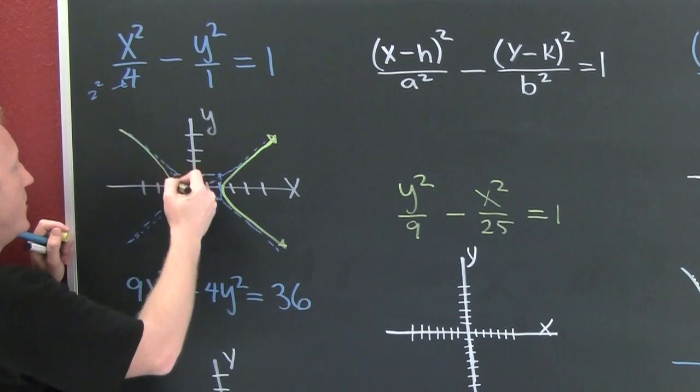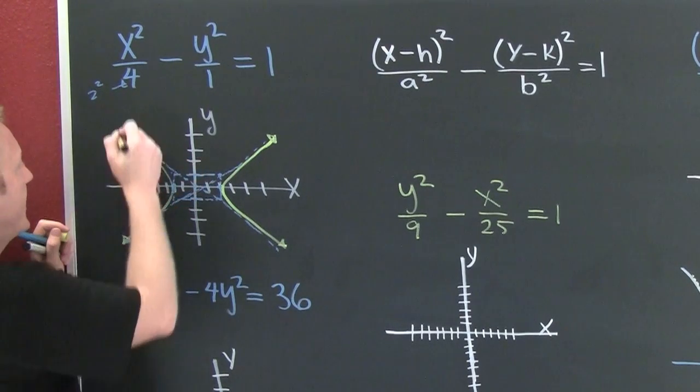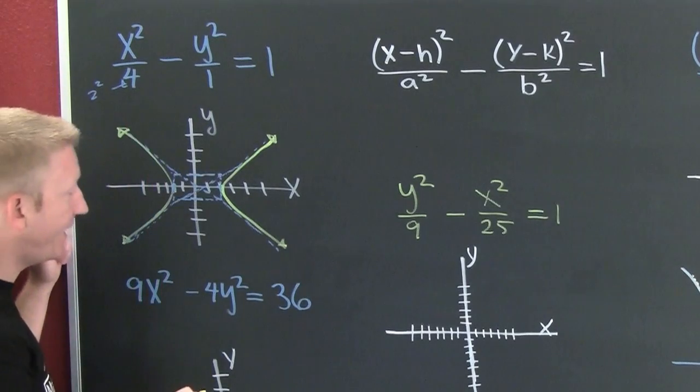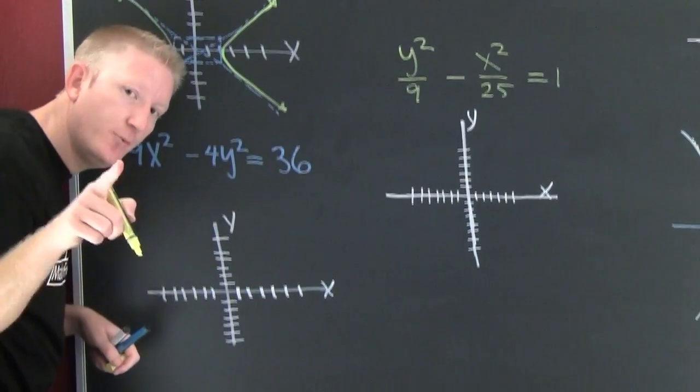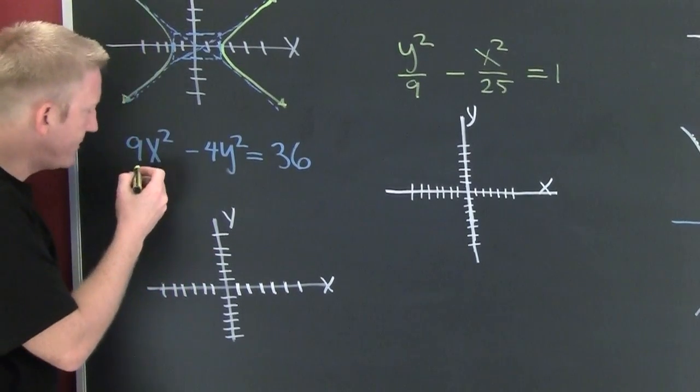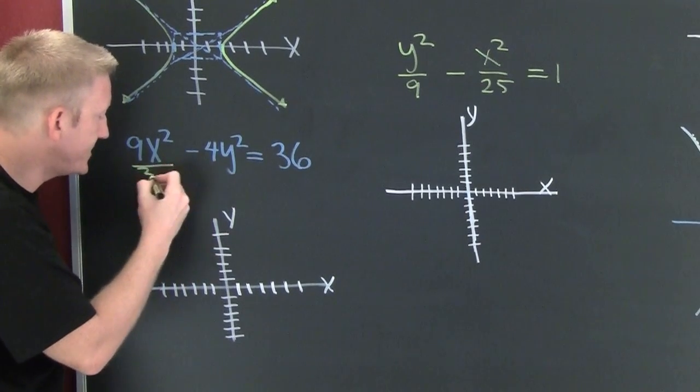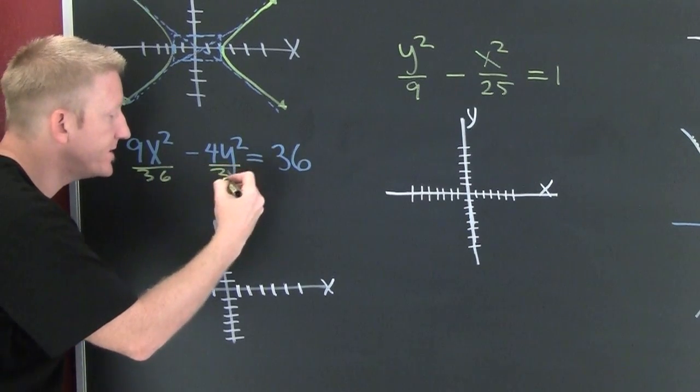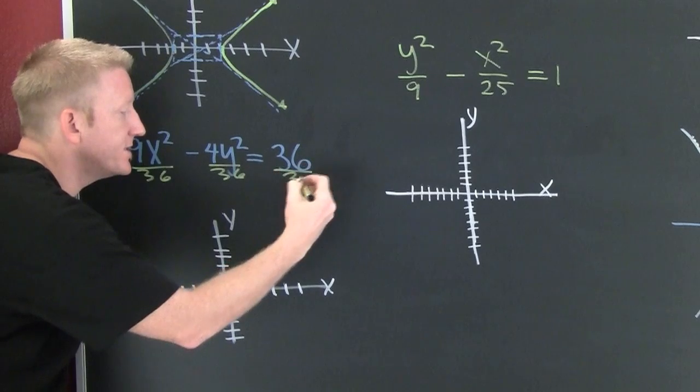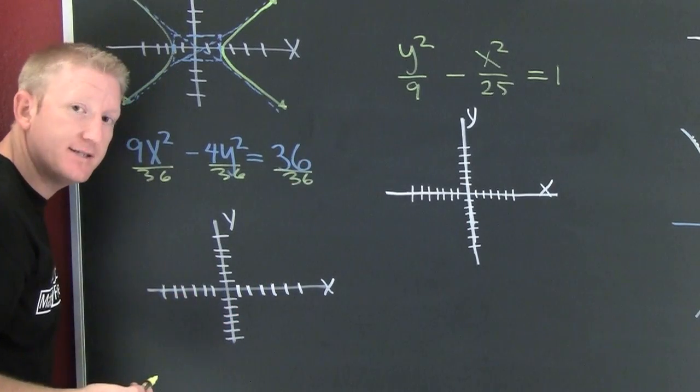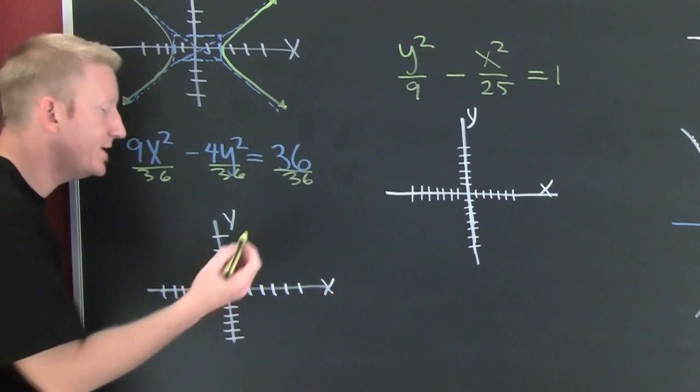Let's get down here. We got to get this in standard form, so I'm going to divide everything by 36. The standard form of a hyperbola is equal to one.